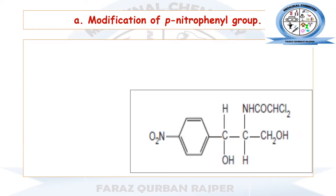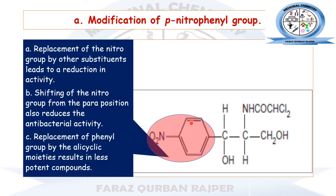First is the modification of the para-nitrophenol region of chloramphenicol. This region can be modified by substitution with other functional groups, by reduction of its double bond, or by shifting of its position. If we replace the para-nitro functional group with any other functional group, this will result in a reduction of antibacterial activity. Similarly, if we shift the nitro group from the para position to the meta or ortho position, this will also cause a reduction in antibacterial activity.